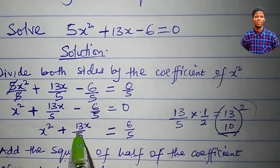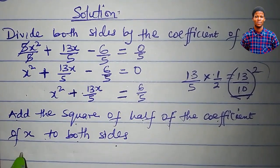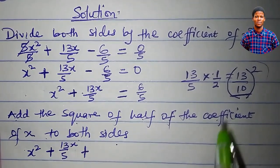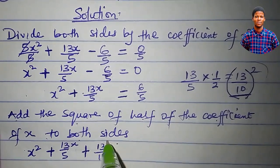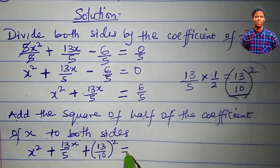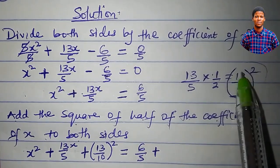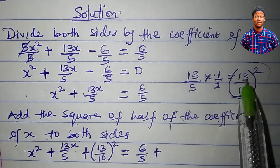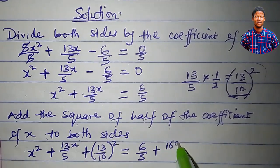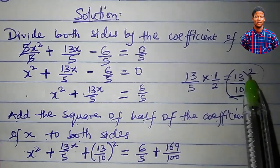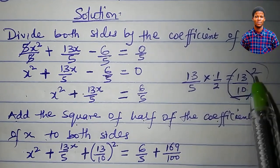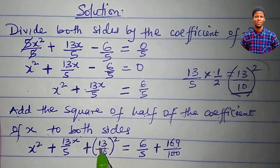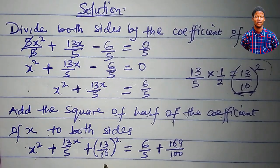So this is what I am adding to both sides of this equation. It will now be x squared plus 13x over 5, plus 13 over 10 all squared, which is equal to 6 over 5 plus the same 13 over 10 all squared. I want to write 13 over 10 all squared in another way: it is equal to 169 over 100, because 13 squared is 169 and 10 squared is 100. These two are the same. The reason for not simplifying the left side is to make it easier to factorize later.